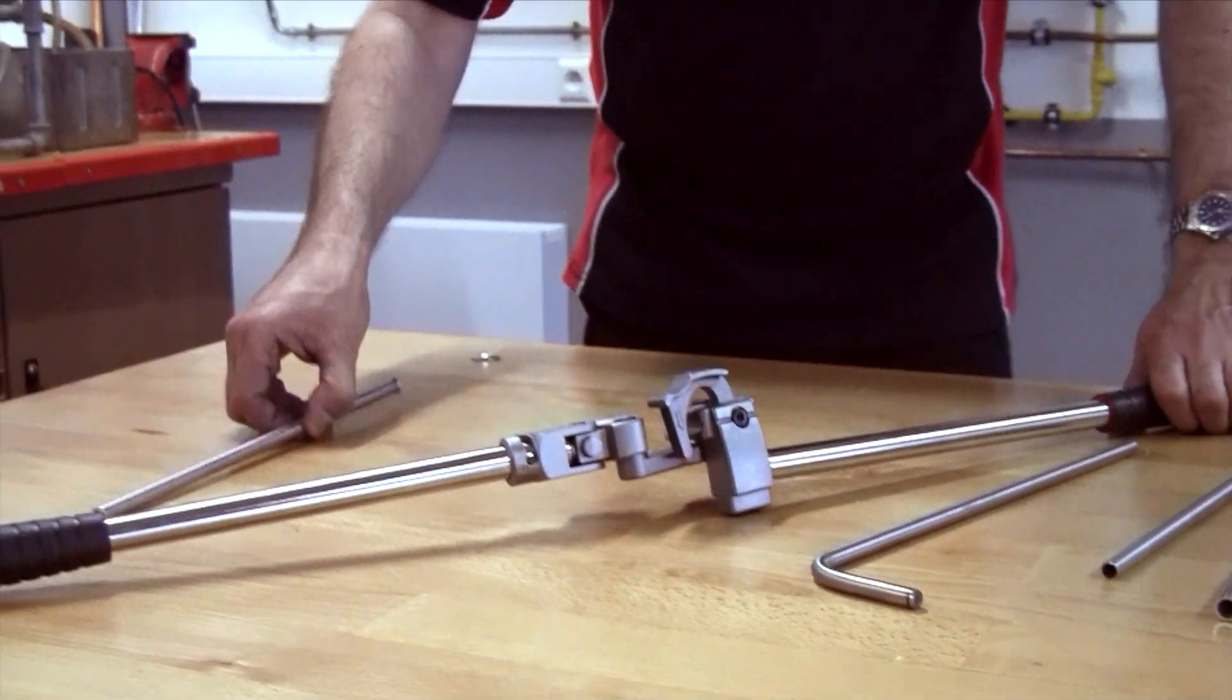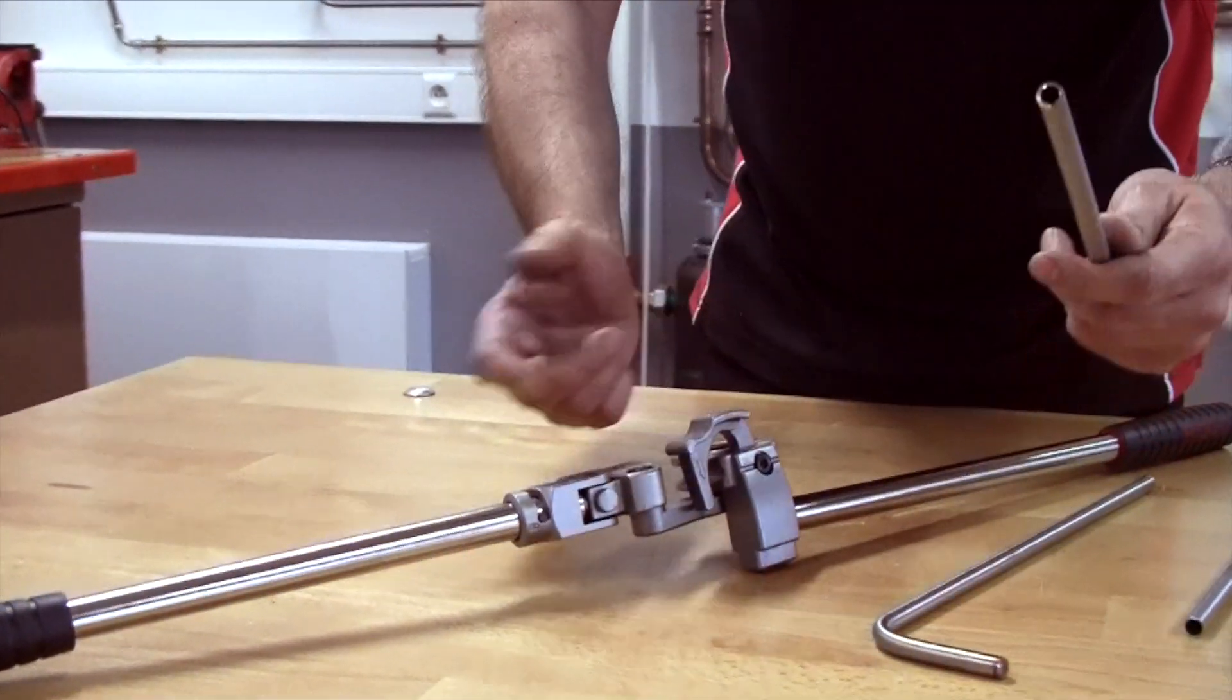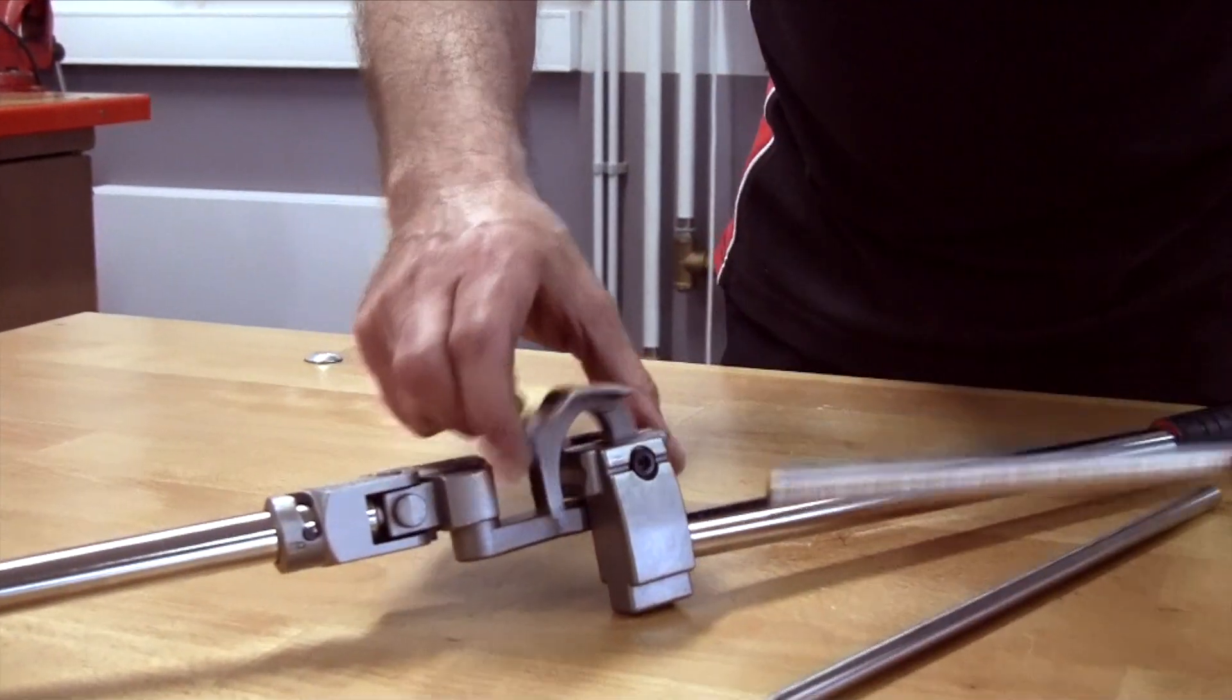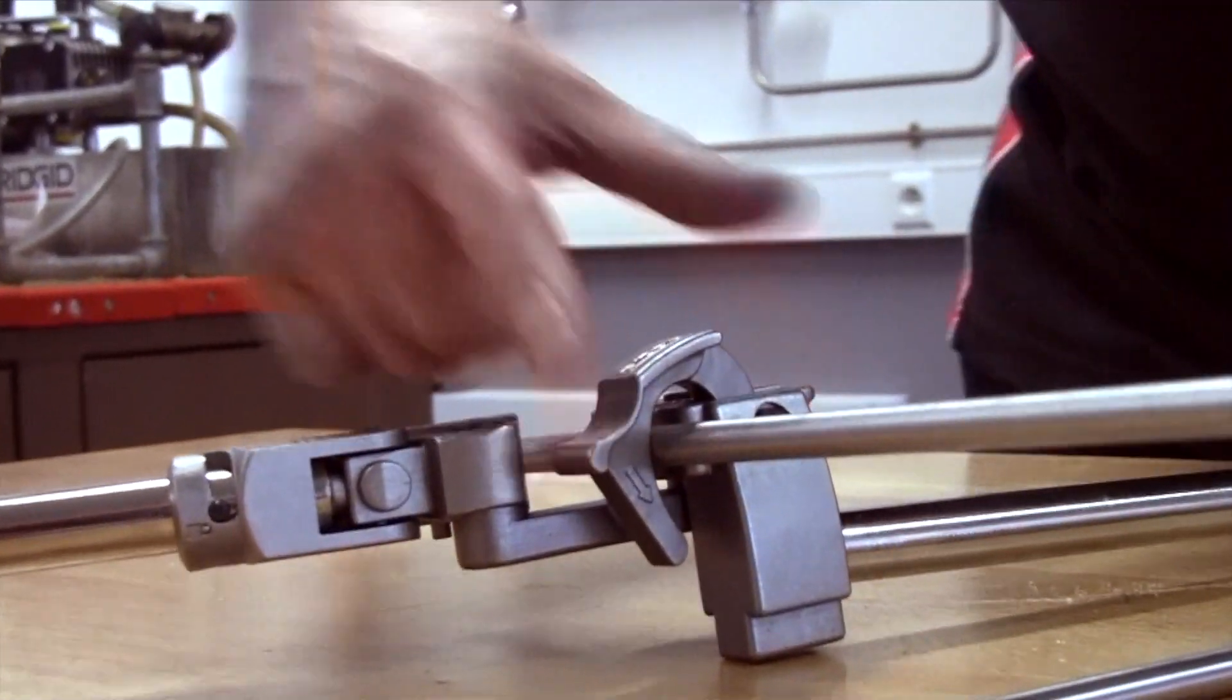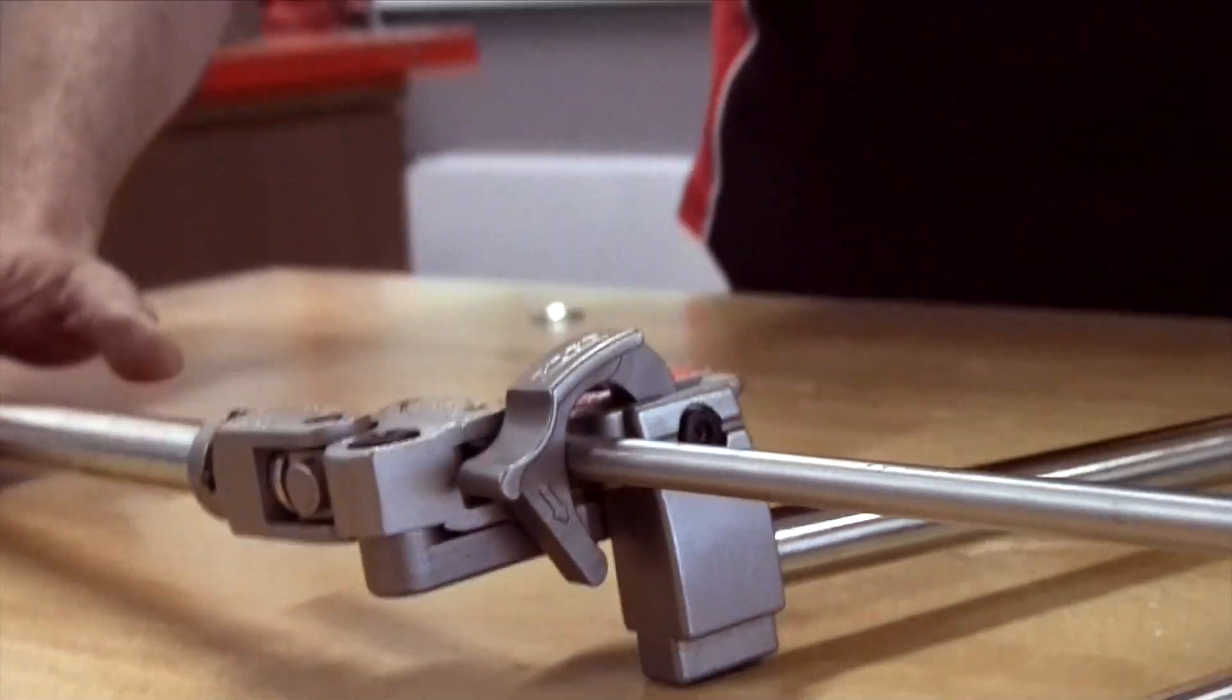So quite simply, all we do is take a piece of tube—we're using a bit of 5/8 stainless steel here—open up the latch, insert the tube, and then we're ready to go.